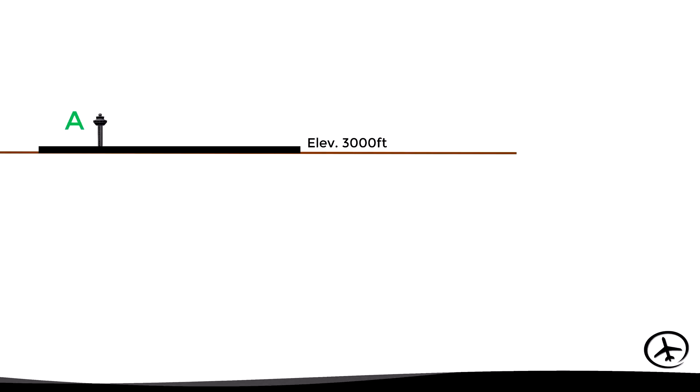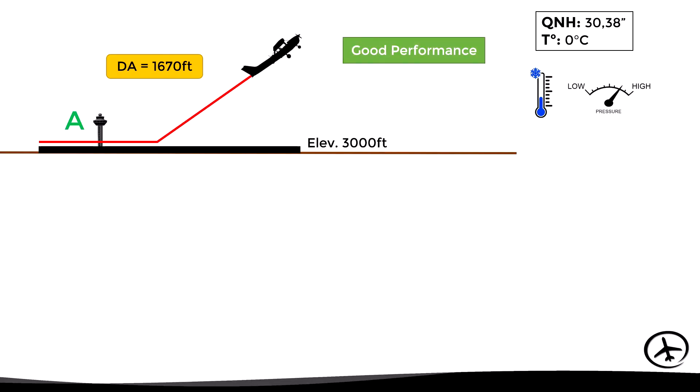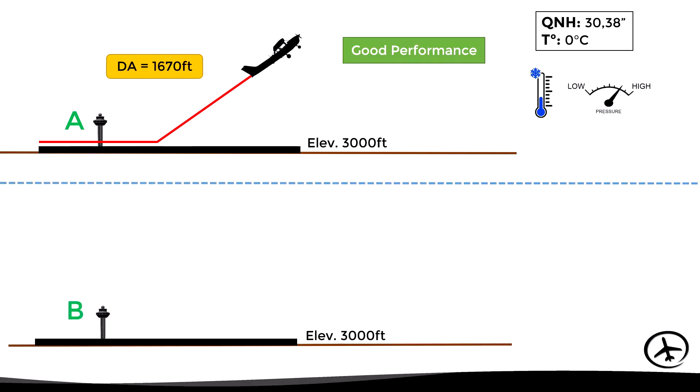Suppose airport A with an elevation of 3,000 feet reports a QNH of 30.38 inches of mercury and a temperature of 0 degrees Celsius. This indicates relatively high pressure and low temperature, causing high air density. Since the air density is high, the density altitude will be low — in this case 1,670 feet. Aircraft operating at this airport will behave as if flying at 1,670 feet, presenting good performance.